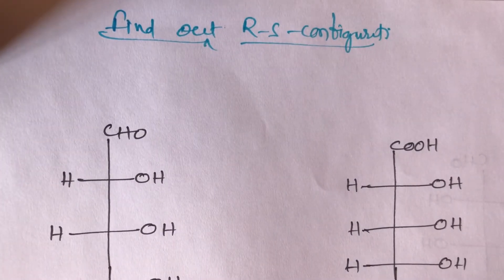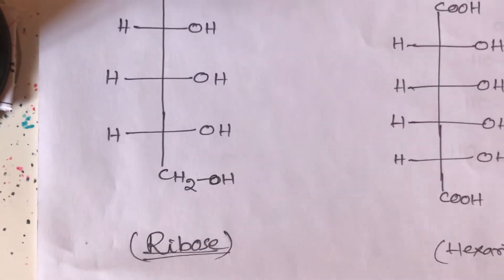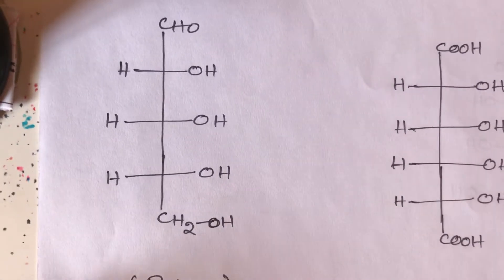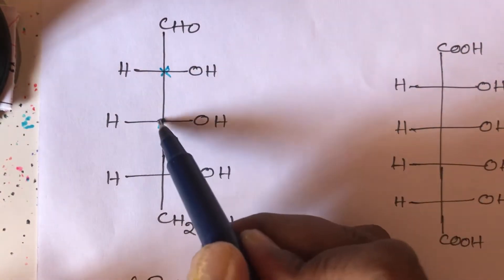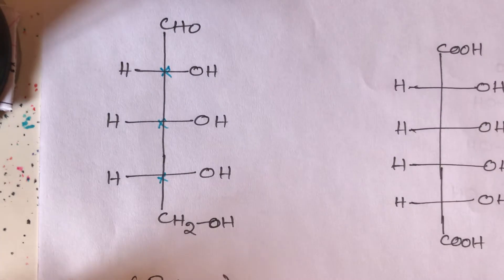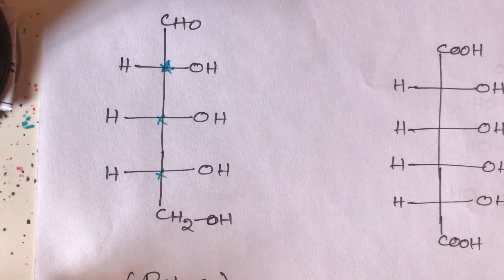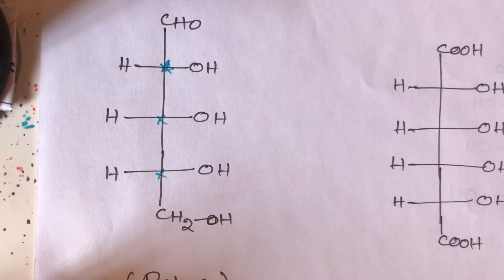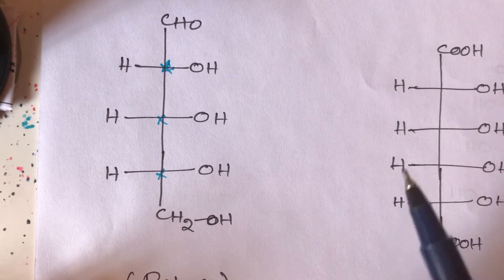How do students find out the R/S configuration for ribose? In ribose, how many chiral centers are there? There are three chiral centers in ribose. A chiral carbon means a carbon bonded with four different groups. In the given ribose structure, we need to find the R/S configuration for each chiral center.